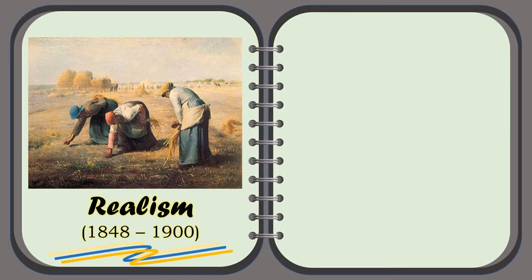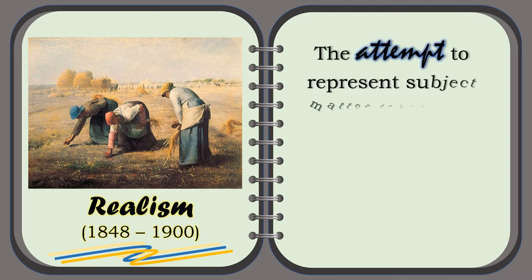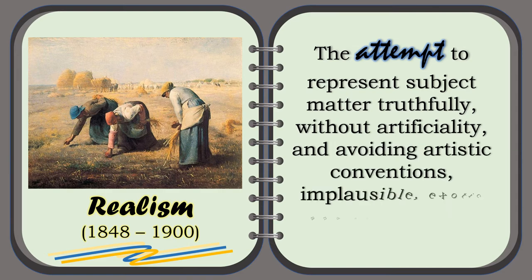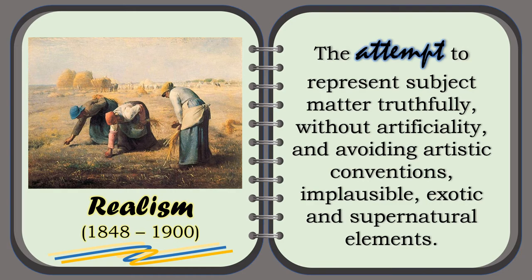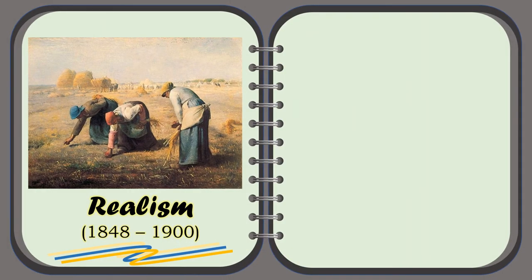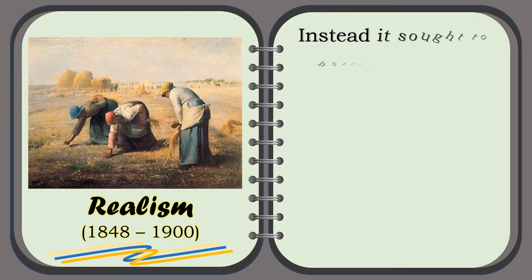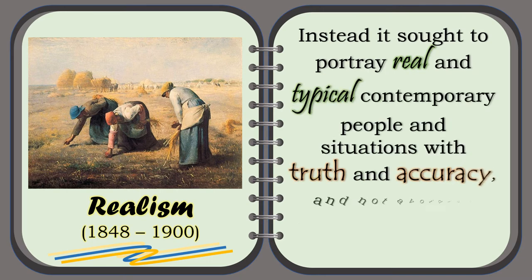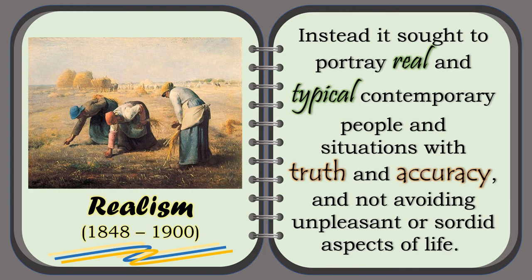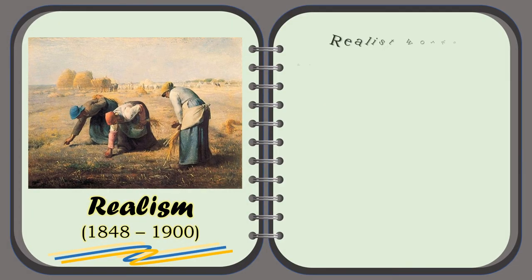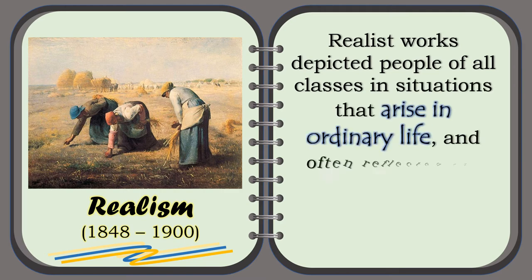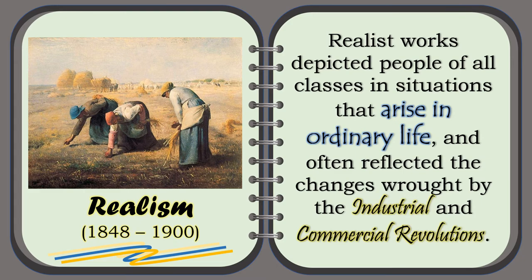The Realism Period. The attempt to represent subject matter truthfully, without artificiality, and avoiding artistic conventions, implausible, exotic, and supernatural elements. Realism was an artistic movement that began in France in the 1850s, after the 1848 revolution. It sought to portray real and typical contemporary people and situations with truth and accuracy, not avoiding unpleasant or sordid aspects of life. Realist works depicted people of all classes in situations that arise in ordinary life, and often reflected the changes wrought by the industrial and commercial revolutions.